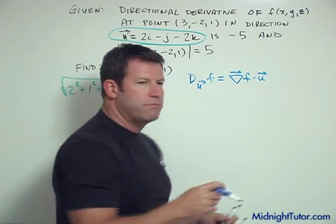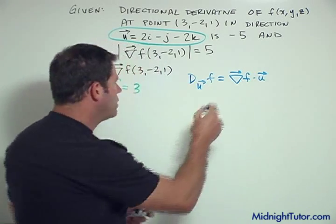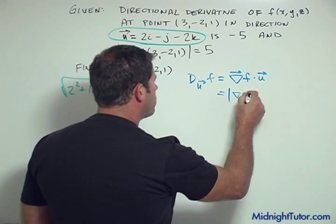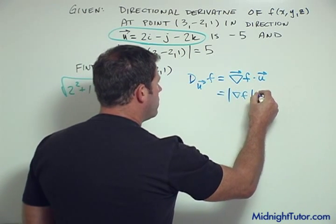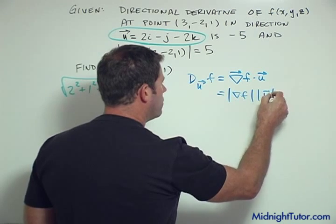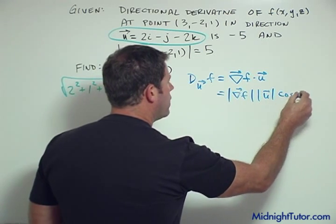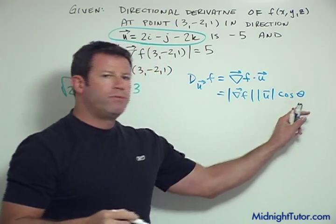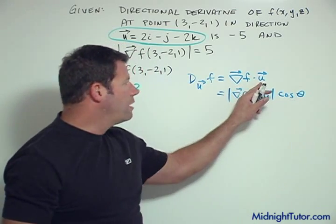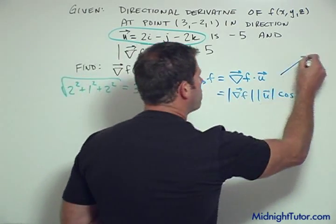Now the dot product is the same as |∇f| |u| cos(θ), where theta would be the angle between the gradient which is a vector and u a vector. Here's the gradient, here's u, this is theta.